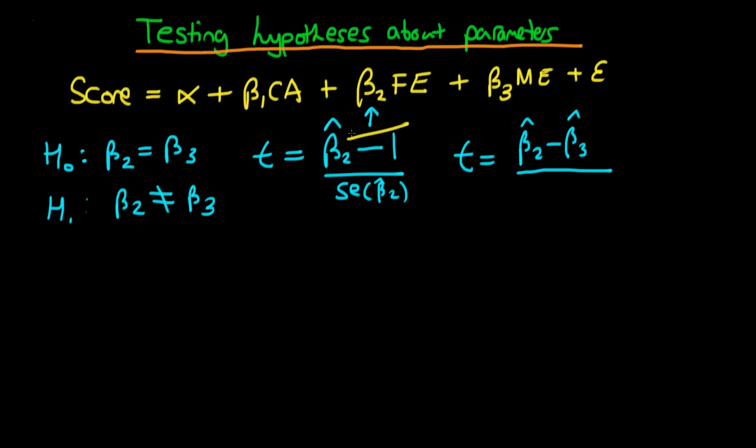We have to take into account both of their sampling variances. Specifically, we divide through by the standard error of (β̂₂ - β̂₃). Now, for this denominator you might think we only need to know the standard error of β̂₂ and the standard error of β̂₃, but you would be wrong.